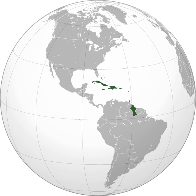Situated largely on the Caribbean plate, the region comprises more than 700 islands, islets, reefs and caves. These islands generally form island arcs that delineate the eastern and northern edges of the Caribbean Sea. The Caribbean islands, consisting of the Greater Antilles on the north and the Lesser Antilles on the south and east, are part of the somewhat larger West Indies grouping, which also includes the Lucayan Archipelago comprising the Bahamas and Turks and Caicos Islands.